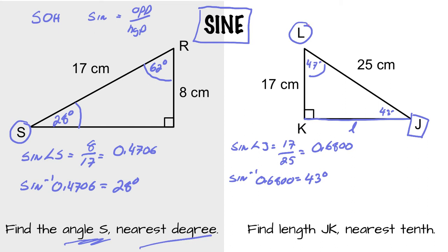And now from L's perspective, we can figure out the length of JK. So now we're going to go from L's perspective. So sine L equals JK or little l compared to 25. We know that the angle of L is 47.